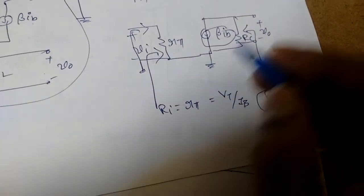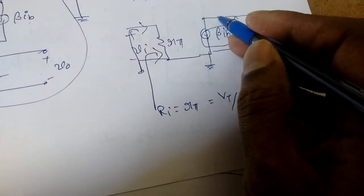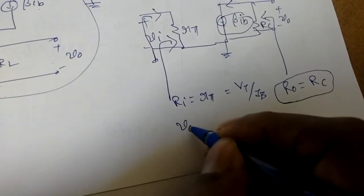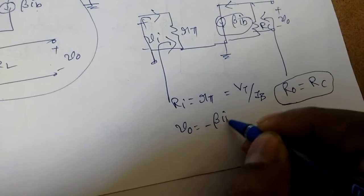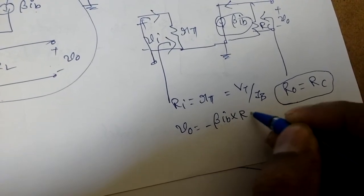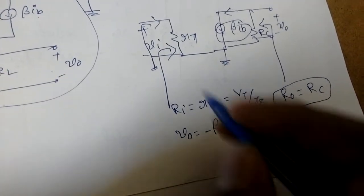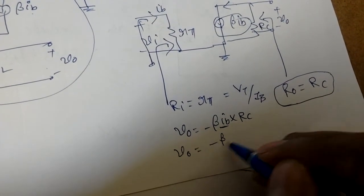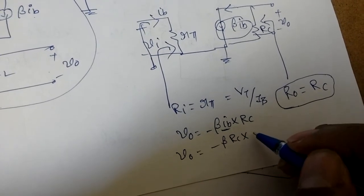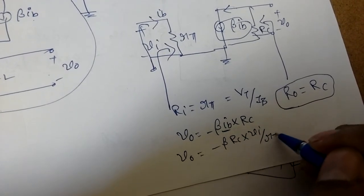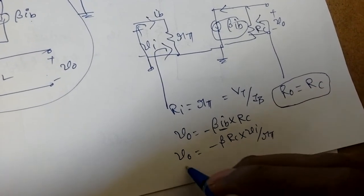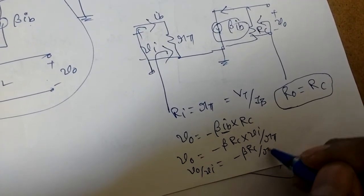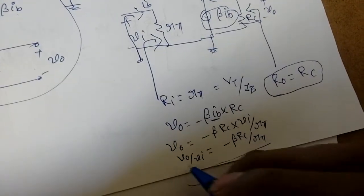For the voltage gain: V_out equals minus beta times i_b times r_c, since beta·i_b flows into r_c. Since i_b equals V_in / r_pi, substituting gives V_out equals minus beta times r_c times (V_in / r_pi). Therefore, the voltage gain A_v equals V_out / V_in equals minus beta·r_c / r_pi.